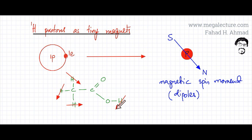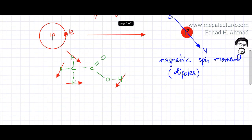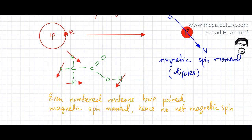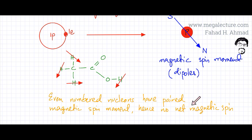The arrow represents the magnetic field direction, the north pole and the south pole. What about the other atoms — carbon and oxygen? These atoms do not exhibit a magnetic field. The reason is that even-numbered nucleons always have paired magnetic spin moments, so they don't have any overall magnetic spin moment. All the magnetic fields cancel out.